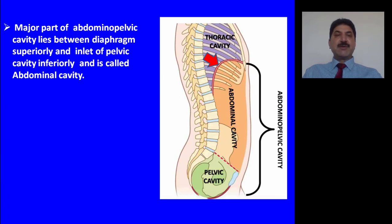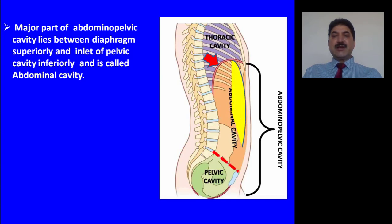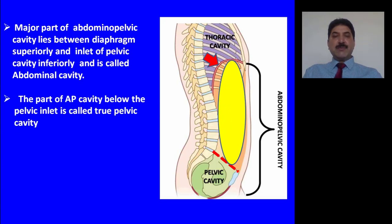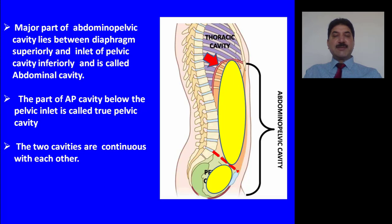The major part of abdominal pelvic cavity lies between the diaphragm superiorly and the inlet of the pelvic cavity inferiorly, and is called the abdominal cavity. So the abdominal pelvic cavity is divided into abdominal cavity and pelvic cavity. Abdominal cavity is bounded superiorly by the thoracoabdominal diaphragm and inferiorly by the inlet of the pelvis. The part of abdominal pelvic cavity below the pelvic inlet is called the true pelvic cavity. The two cavities — abdominal and pelvic — are continuous with each other.